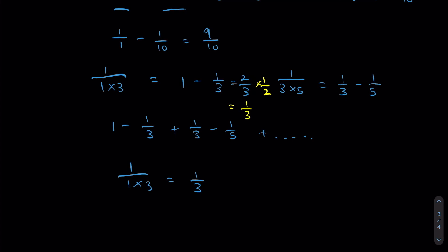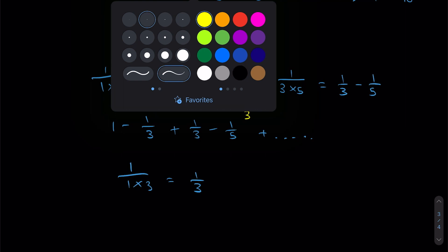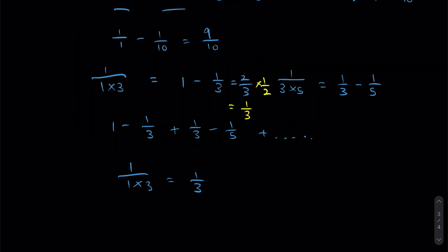Now let's take a look at 1 over 3 times 5. This right here, if you did the actual math, when you do the subtraction, you'll get 2 over 15.